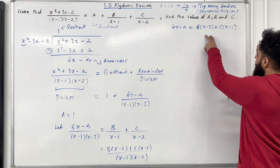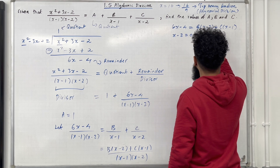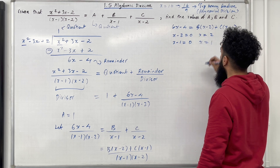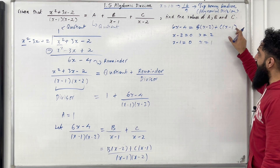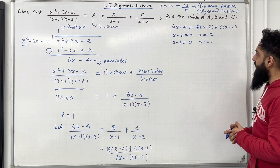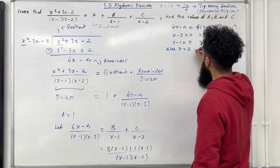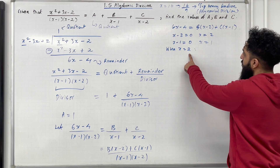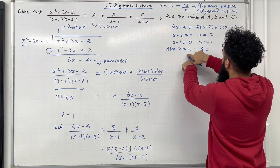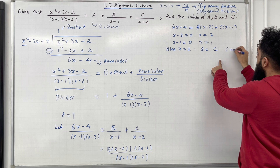I can set these two brackets equal to 0. So x minus 2 equals 0 gives x equal 2, and x minus 1 equals 0 gives x equal 1. Starting with x equal 2: substituting into the left hand side gives me 8, and substituting into the right hand side gives me c. So c is equal to 8.